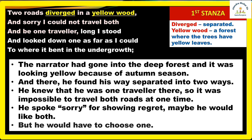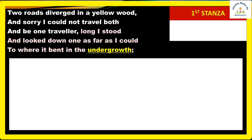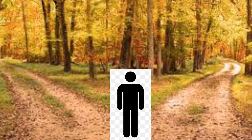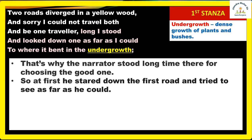In our lives too, there are many situations where both options seem good but we have to choose one. The narrator 'stood long' — that is, he stood there for a long time to choose the better option. He looked down the first road as far as he could to see where it led. 'Undergrowth' means a dense growth of plants and bushes. He tried to look ahead to determine whether the road was suitable for him.